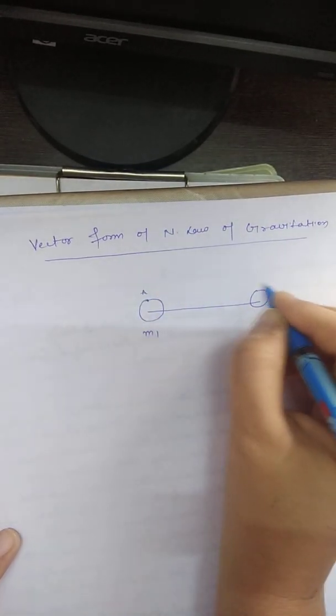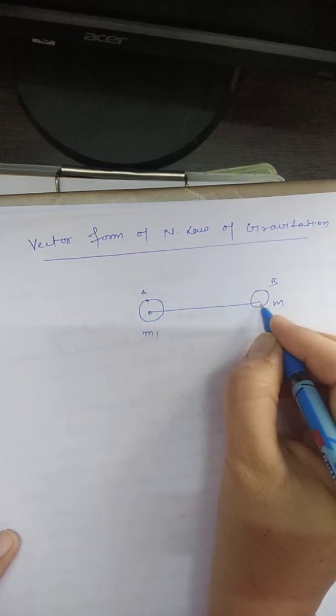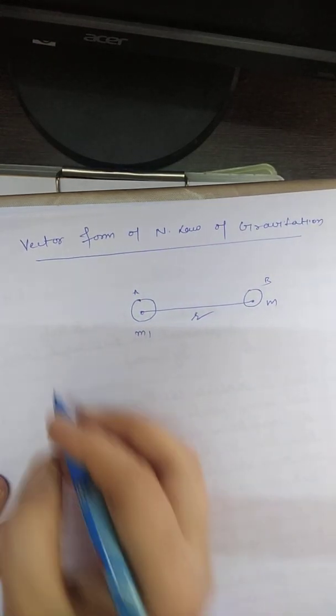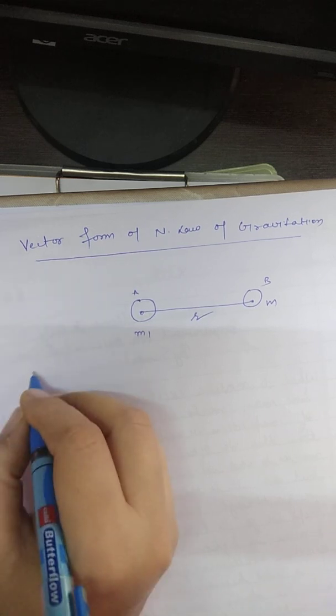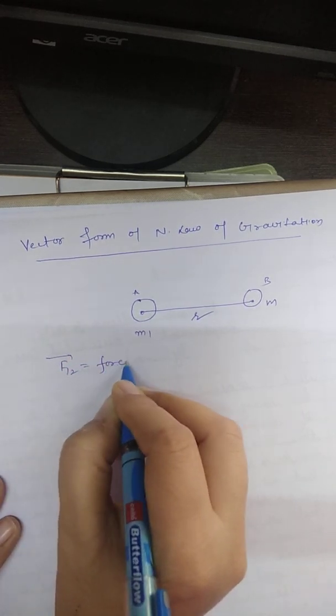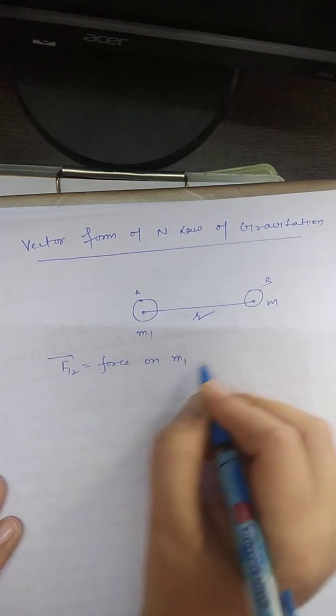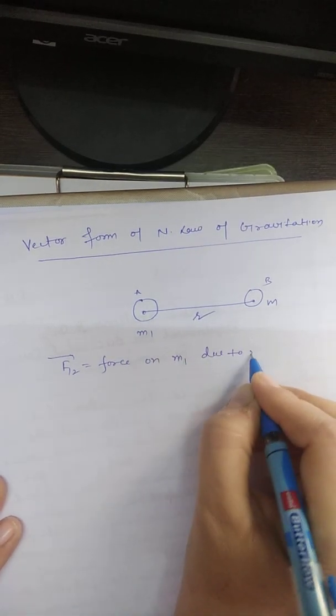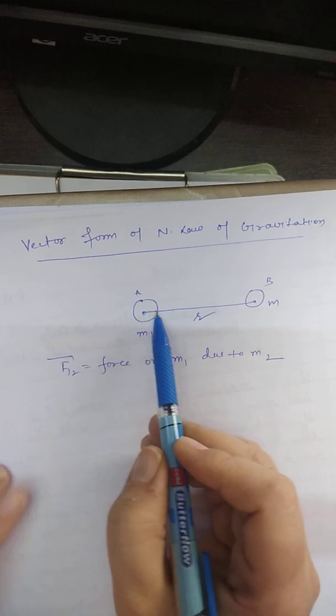This is mass A, this is mass B. Now what is the separation between them? R. So we will take F12. F12 is the force on mass M1 due to M2.